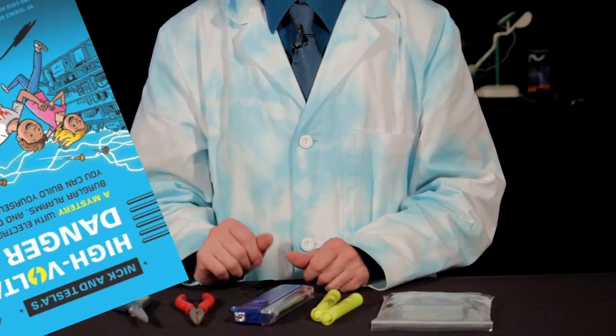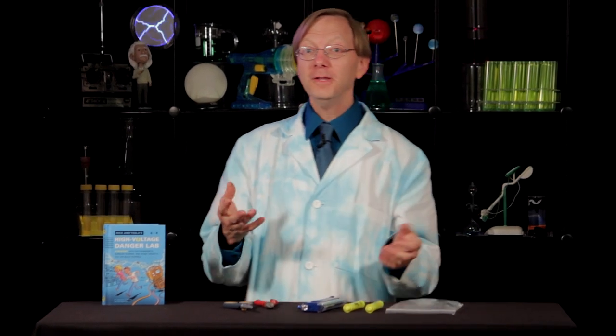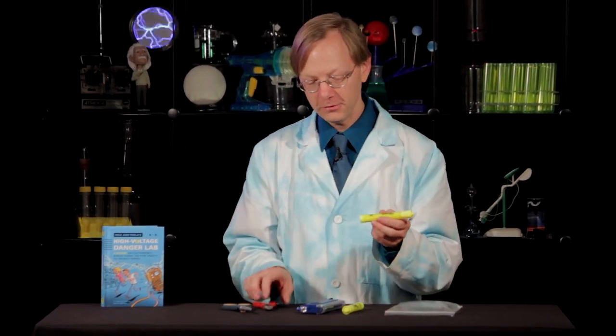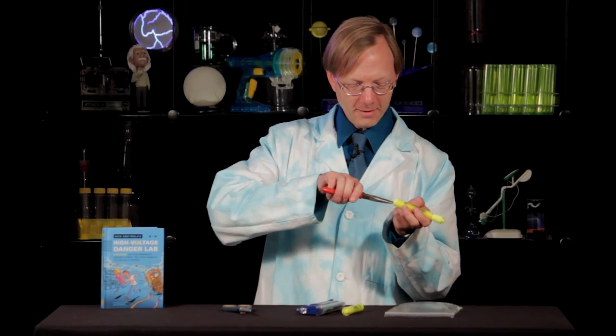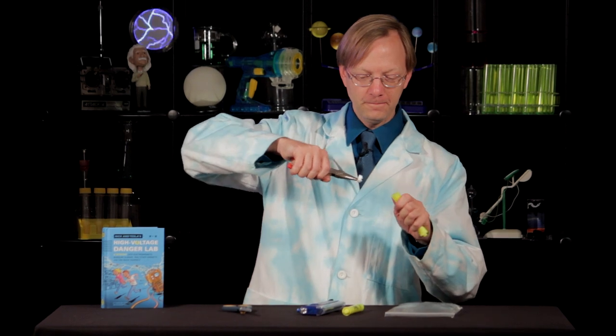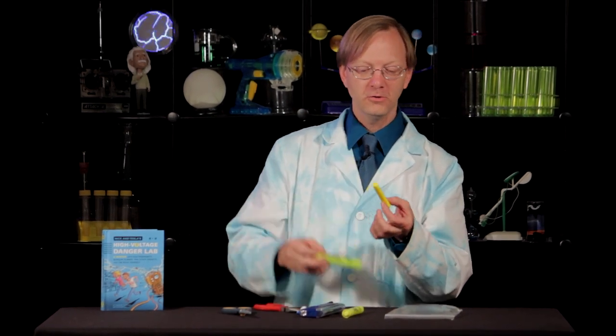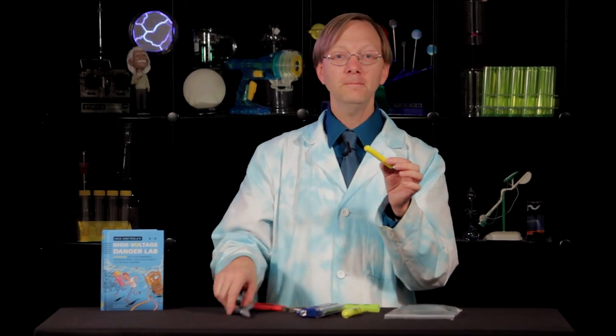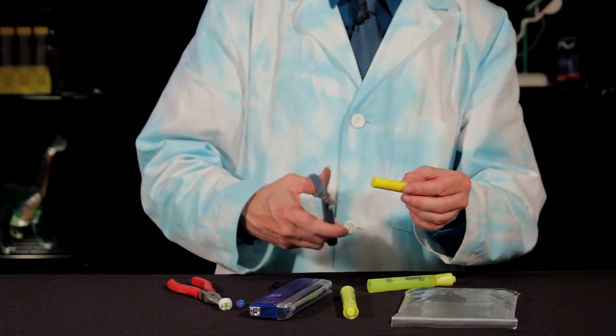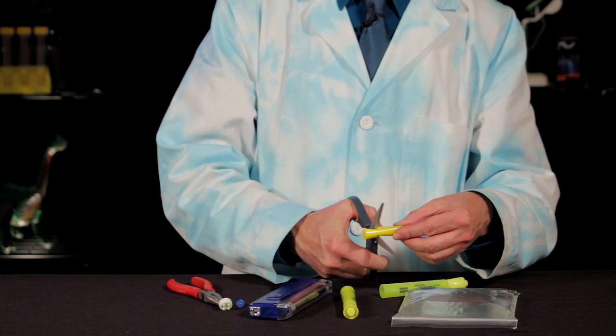All right, let's get started. To begin you're going to need to get the ink out of these fluorescent highlighter markers. Now I found the best way to do that is to just get yourself some needle nose pliers and pull the back of it right out. If that goes well the ink should come right out. Then take your scissors and cut that ink into about four or five different pieces.